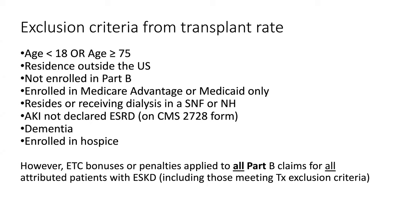There are some exclusions from the transplant rate: patients under 18 or over age 75, those residing outside the United States, those not enrolled in Medicare Part B, those with Medicare Advantage or Medicaid as primary, those residing in a subacute nursing or nursing home facility, those with AKI not declared as ESRD on the 2728 form, those with dementia, or those enrolled in hospice. That said, ETC bonuses and penalties apply to all Part B claims for all attributed ESRD patients, including those meeting exclusion criteria.